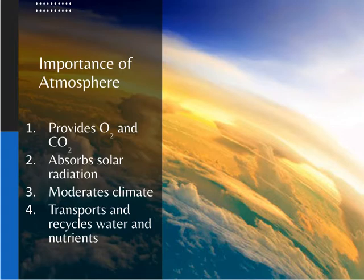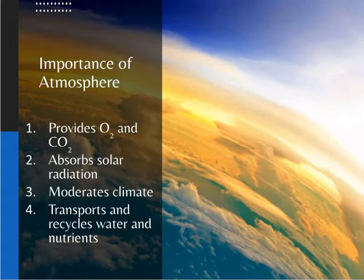The atmosphere absorbs solar radiation — enough that we are not super cold like Mars, but not too much like Venus. So we have that nice temperature where liquid water is possible, which is what we need for life. It also moderates climate; it has a pretty high specific heat, so it doesn't change temperature very quickly. Unlike in space, where depending on whether you are in view of the sun's rays or not, you can vary in temperature a couple hundred degrees. On Earth, not so much.